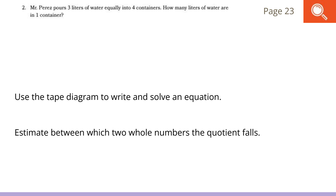Moving on to question 2. Mr. Perez pours 3 liters of water equally into 4 containers. How many liters of water are in one container? Use the tape diagram to write and solve an equation. Estimate between which two whole numbers the quotient falls. Our first task is to draw a tape diagram. Thinking about the whole amount, I know that I have 3 liters of water. 3 liters of water. Now, equally split into 4 containers again. Which means my division sentence is my dividend divided by my divisor, which is four groups. Which means I would get 3 fourths.